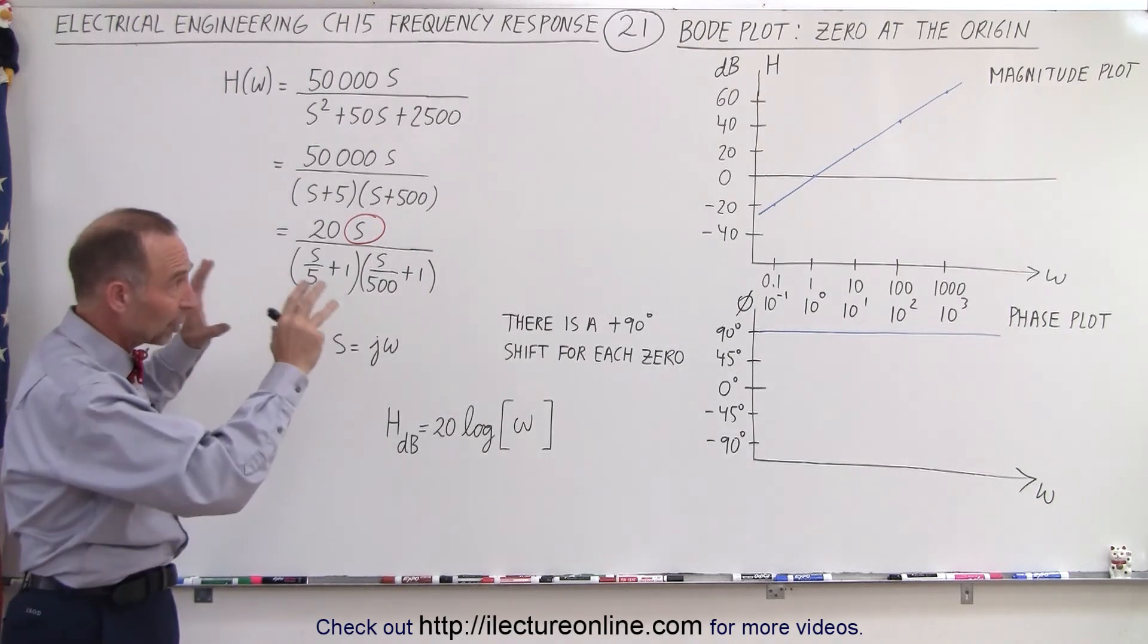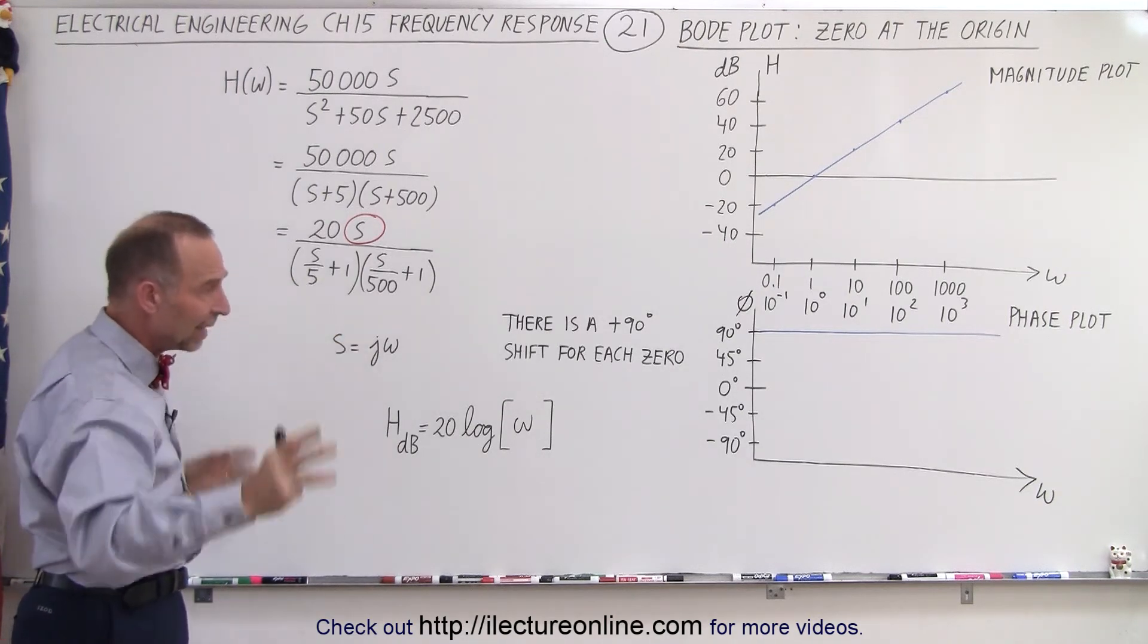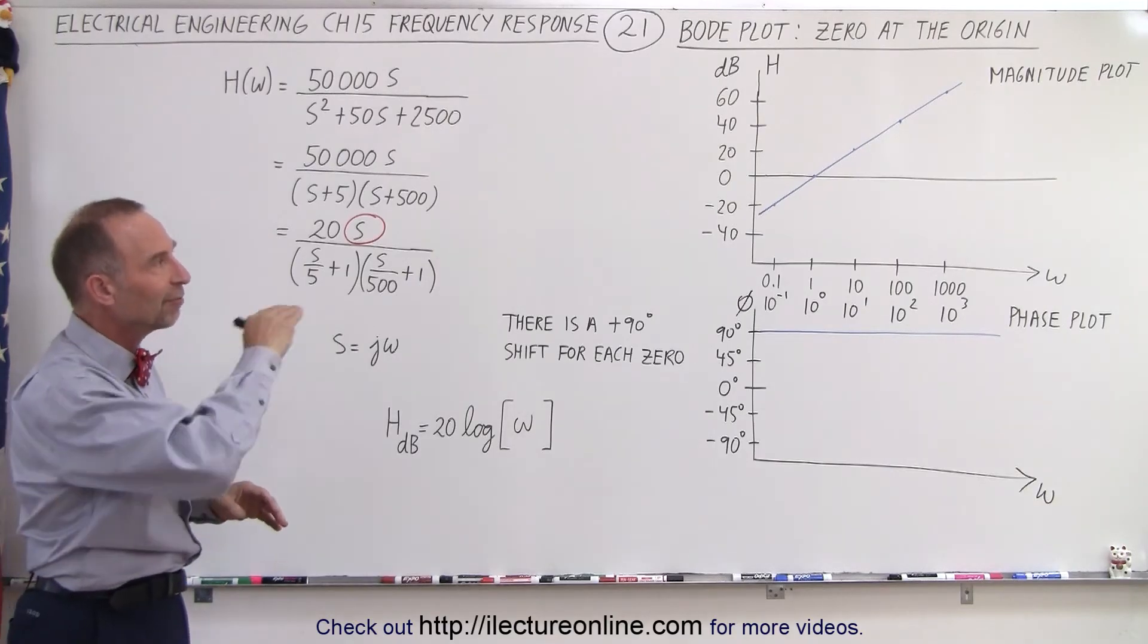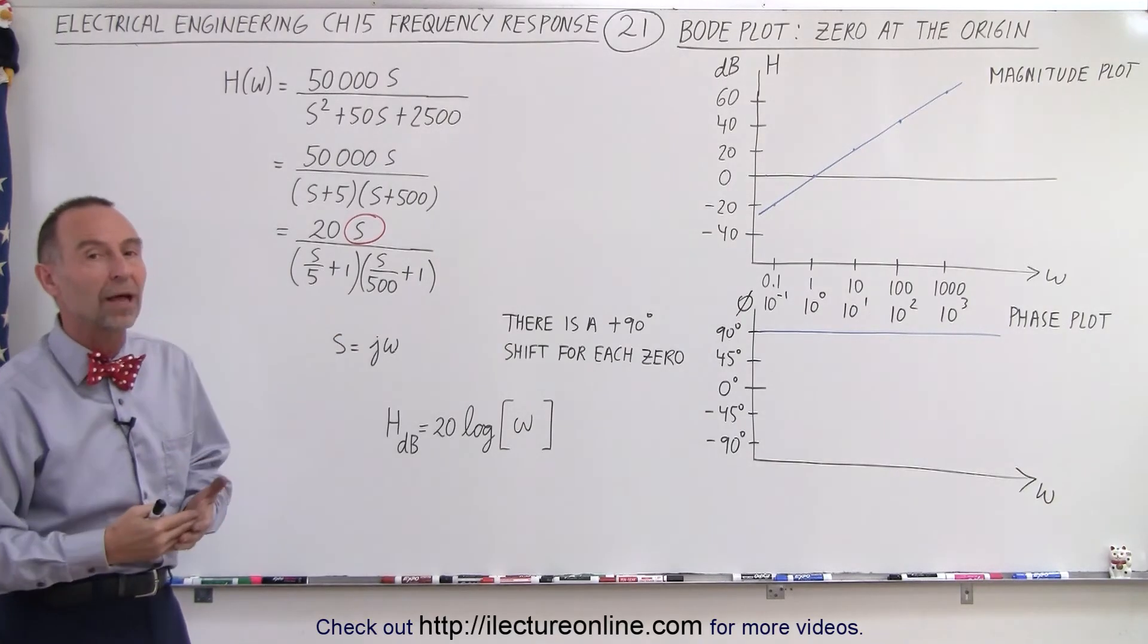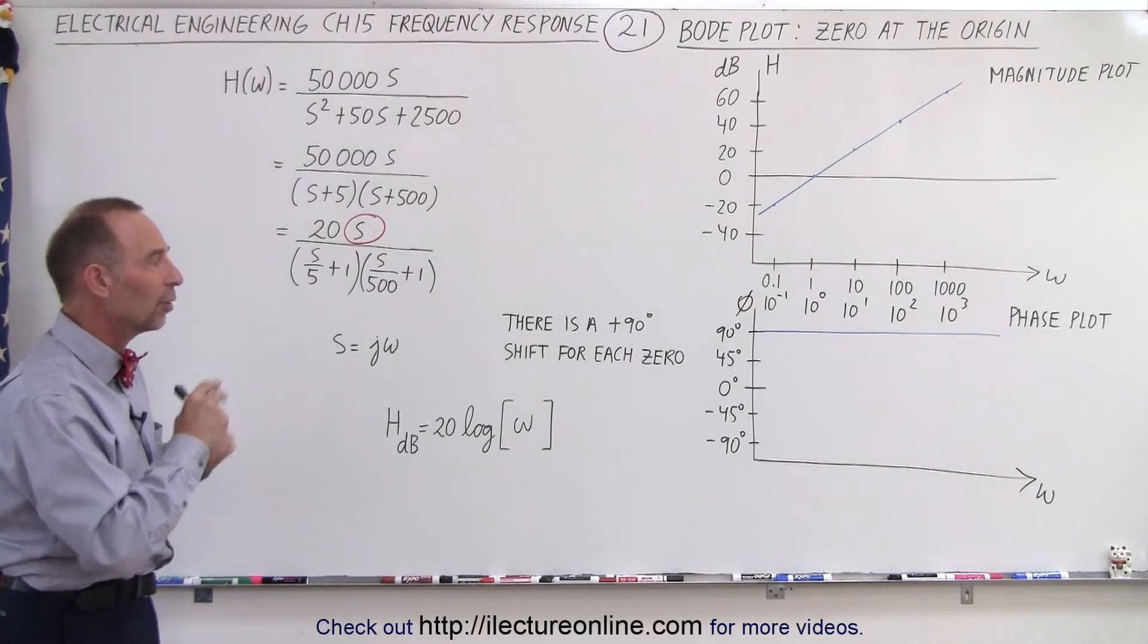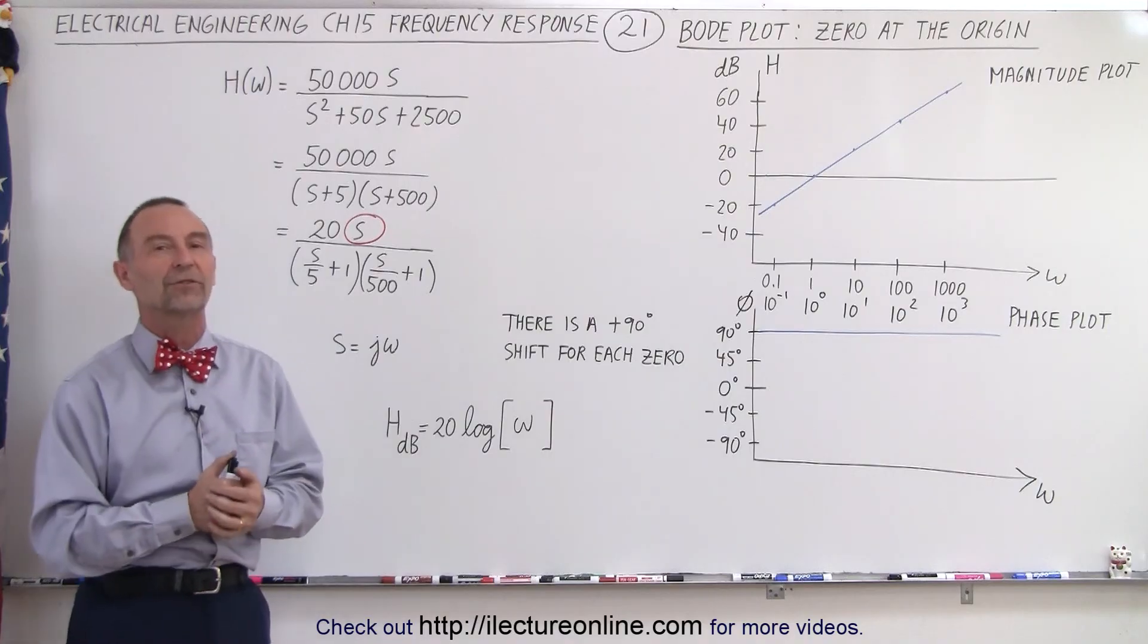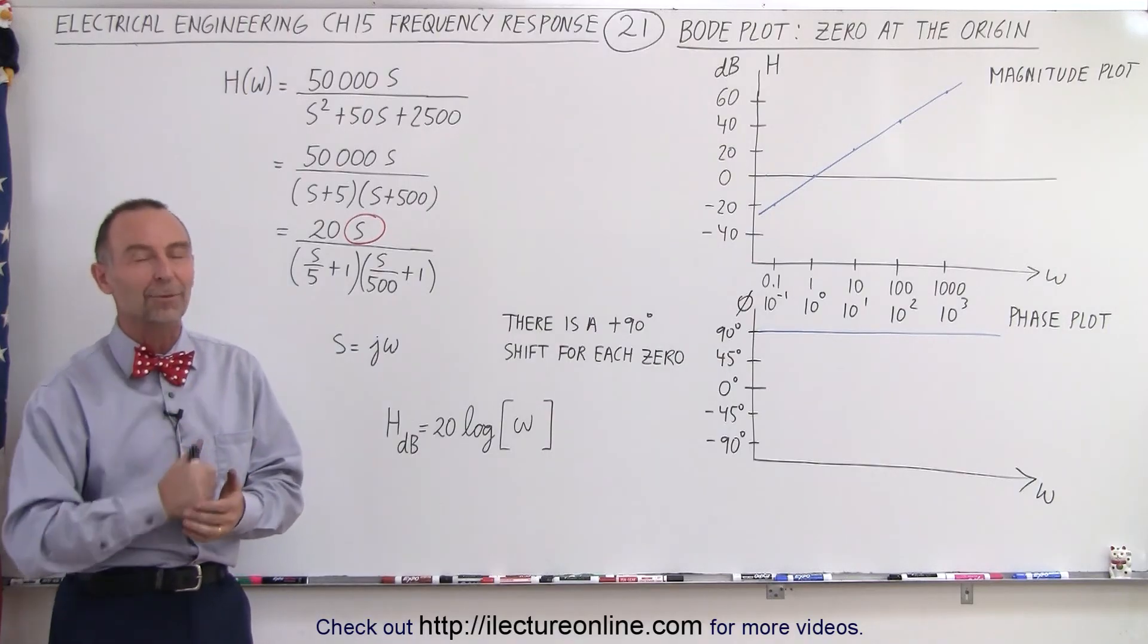So again what we're going to do is we're going to take a look at each one of these separately and then we'll show you some more examples of how to put them all together to draw the final total summation plot of all the magnitudes and all the phases caused by each individual portion of the transfer function. And that is how it's done.